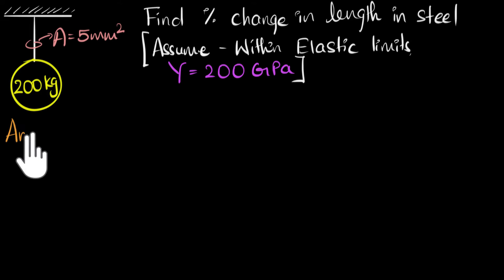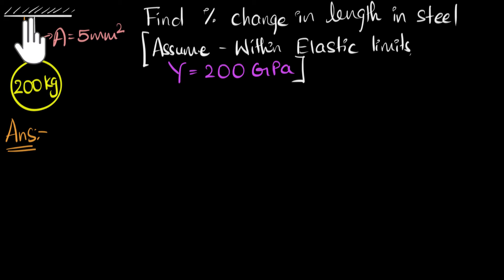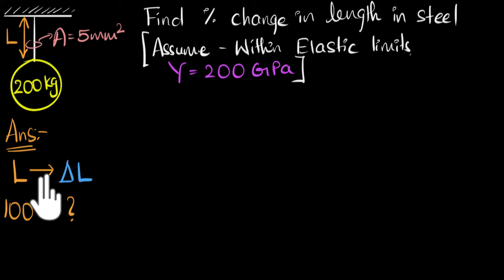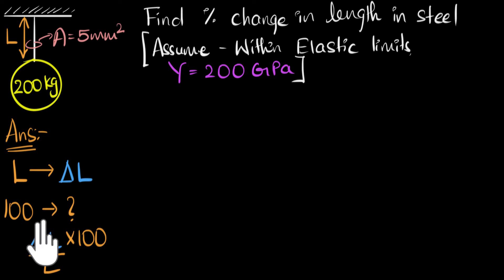The first thing we'll do is try and understand what the question is. We are asked to calculate percentage change in length. Percentage change just means how much is the change out of 100. So if the initial length, the relaxed length, was L, and by hanging the weight the change is delta L, then for L length the change is delta L. So if the initial length was 100, what would be the change? The change for 100 would be delta L times 100 divided by L. So this is what we need to calculate — that's the percentage change.